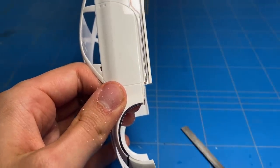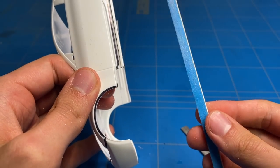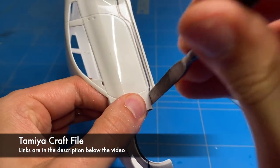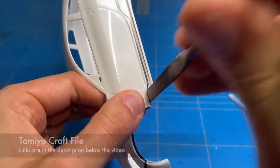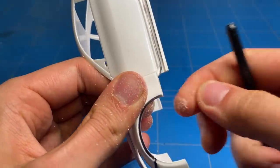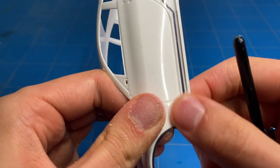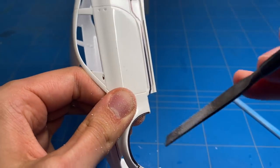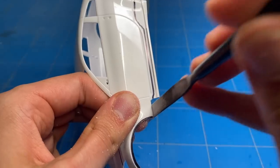I like to do this with a file but you could also use a sanding stick or even sandpaper if that is what you have to use. But in this case I like using the file as it is a rigid piece, doesn't really bend all that much and it leaves a nice clean straight line and also removes the material really fast. So it doesn't even take up all that much time.